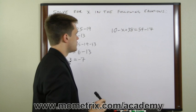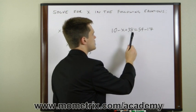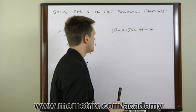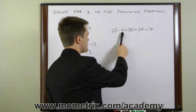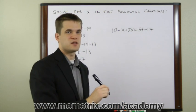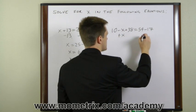In the second example, we have 10 minus x plus 38 equals 54 minus 17. Now in this equation, we have a negative x. So the first thing we want to do is get x to be positive. So to do that, we can add x to both sides of the equation.